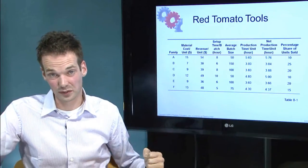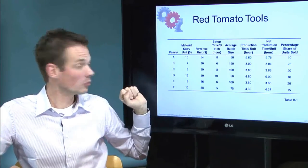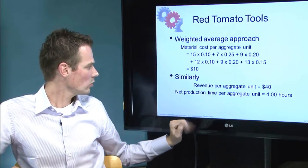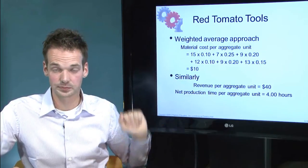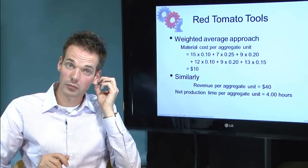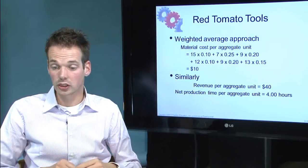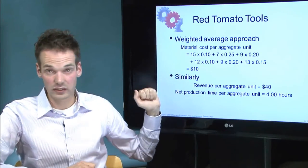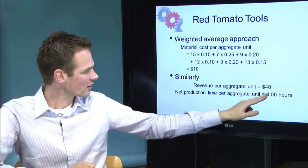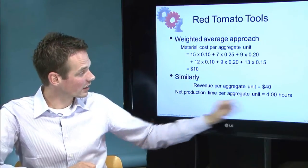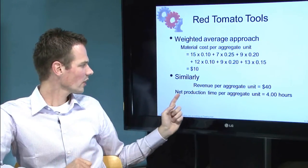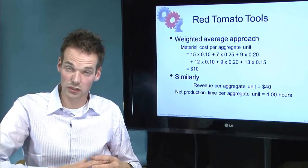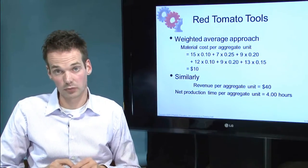That gives you the weighted average of the material cost. The same process is applied to revenue and net production time. With those numbers we calculate: in this example, $10 for the product cost, $40 for the revenue, and 4 hours for the net production time — which is the production time plus the setup time.